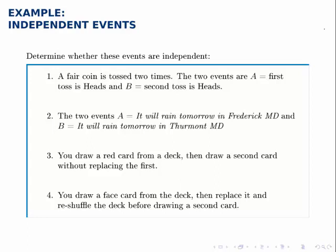Determine whether these events are independent for each of these descriptions. Remember, two events are independent if they have no effect on each other. In other words, one happening has no impact on the probability of the other one happening.